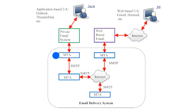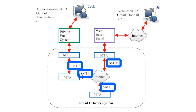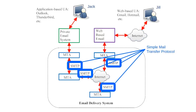The final message transfer agent keeps the email in storage until Jack's user agent requests access to new incoming emails. In the illustration, the connections between message transfer agents are labeled SMTP. SMTP stands for Simple Mail Transfer Protocol, which is the communications protocol that message transfer agents use to communicate with each other. You might think of SMTP as the language of email servers, kind of like how Internet Protocol is the language of the internet.